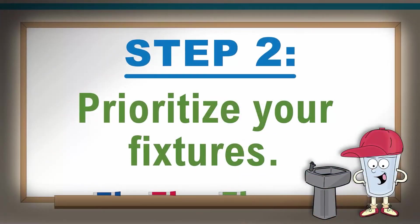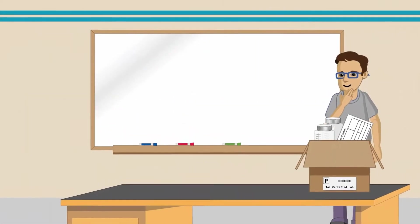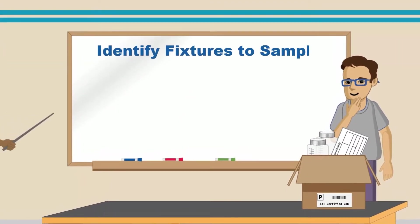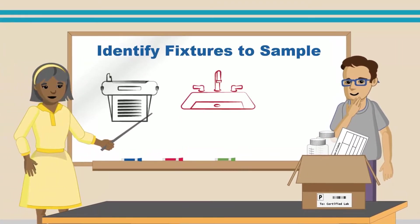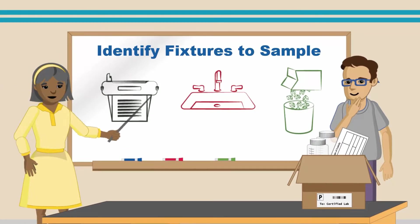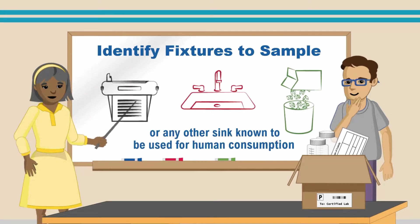Step 2: Prioritize your fixtures. Once you have found your state-certified lab, you need to identify what fixtures you want to sample, prioritizing ones that are actively used for drinking and cooking. A fixture can include drinking water fountains, kitchen sinks, ice-making machines, classroom combination sinks, nurse's office sinks, or any other sink known to be used for human consumption.